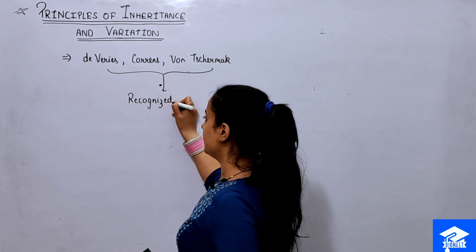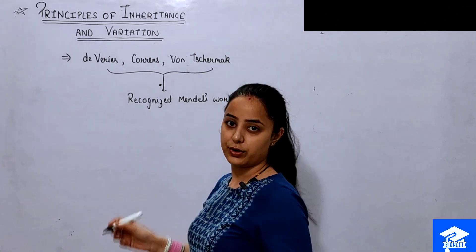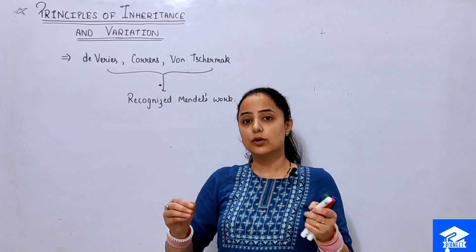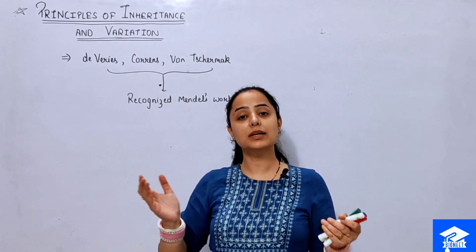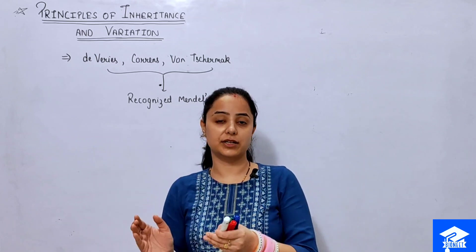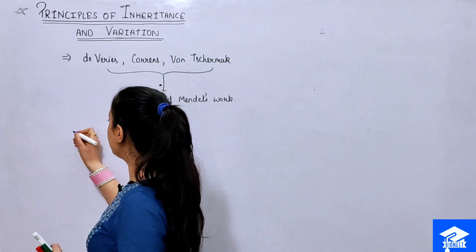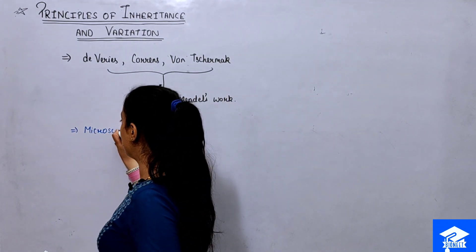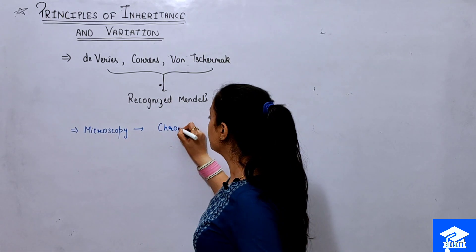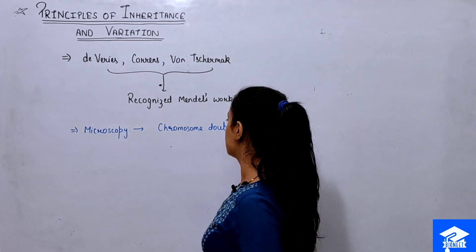Around that time, microscopy had developed greatly. With microscopy, scientists could observe nuclear division, chromosome arrangements, and chromosome doubling before cell division. This made it easier to relate chromosomal behavior to Mendel's findings, and the structure of chromosomes became much clearer to analyze.